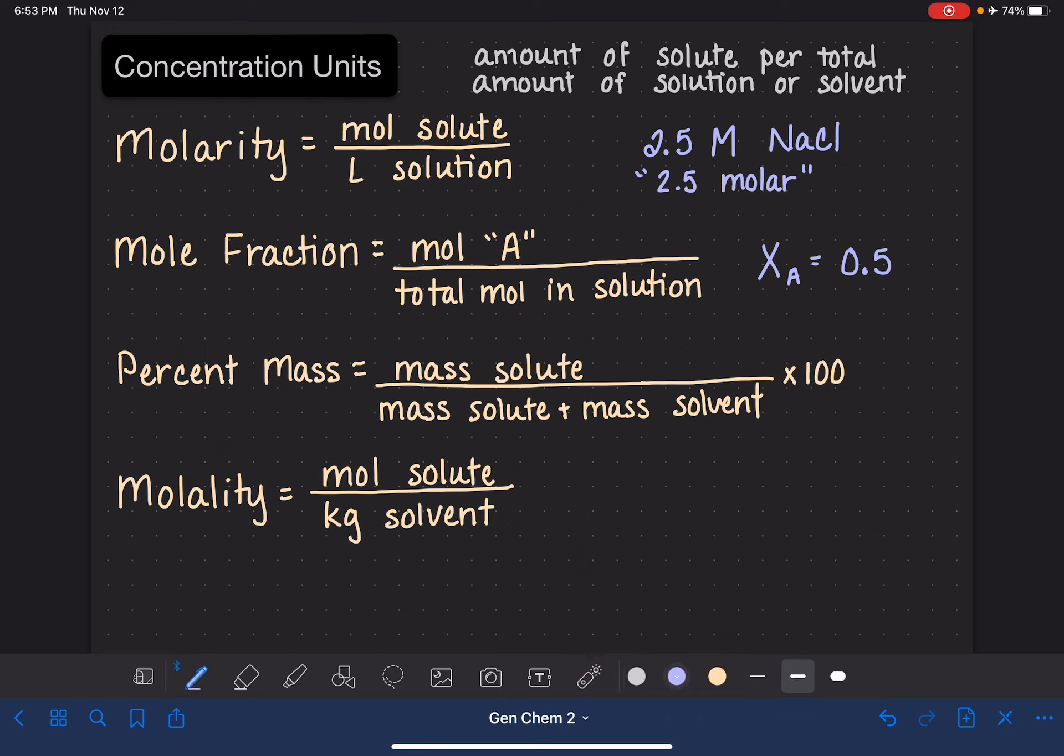Percent mass, we would express this the same way we would express any sort of percentage. So maybe our solution is 2.5%; sometimes we'll write the solute afterwards, 2.5% NaCl. For molality we write a little m, so 2.5 with a little m. We would pronounce this 2.5 molal, which sounds funny. Just like with molarity or any of the others, sometimes we write the formula of the solute afterwards.